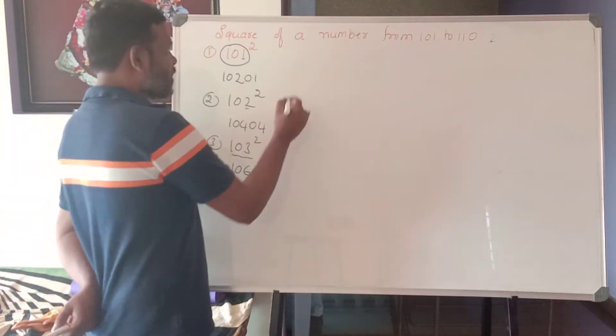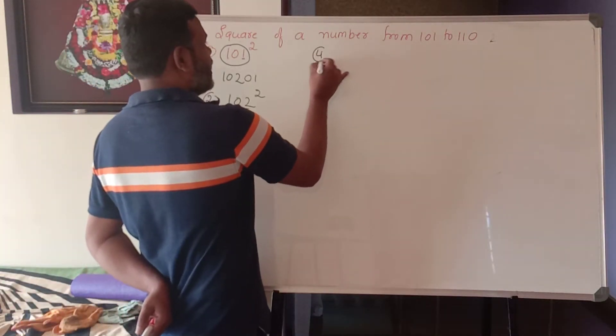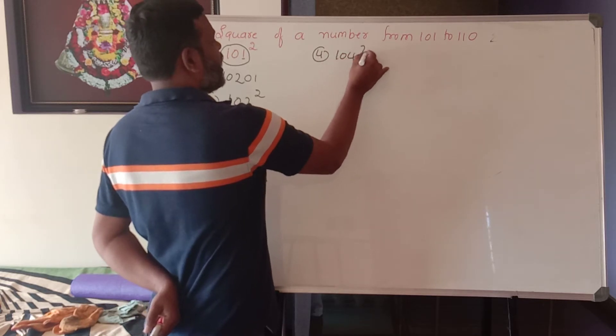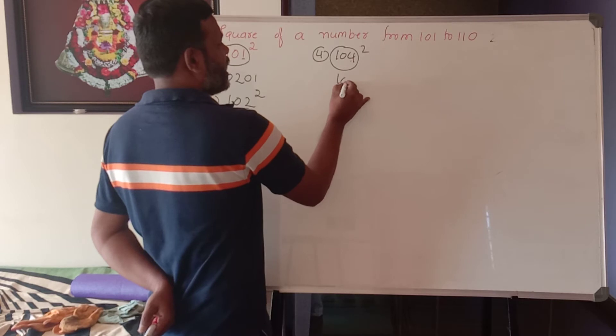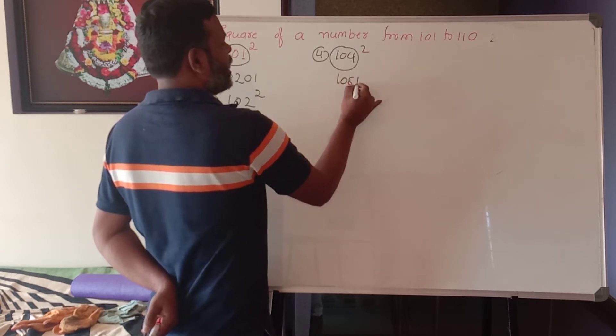Next, the fourth one. That is 104 square. 104 plus last digit 4, 108. And 4 square is what? 16.